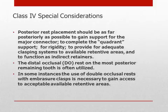Posterior rest placement should be as far posteriorly as possible to gain support for the major connector, to completion of the quadrant support, for rigidity, to provide for adequate clasping systems to available retentive areas, and to function as indirect retainers. The distal occlusal rest on the most posterior remaining tooth is often used. In some instances, the use of double occlusal rests with embrasure clasps is necessary to gain access to acceptable available retentive areas.